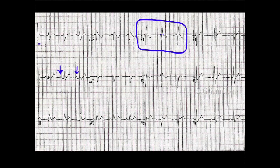To determine this is specifically right bundle branch block, look at V1 for the RSR' pattern. This young man has a very small R wave in V1, which is normal — looking at V2 confirms the R wave exists and is progressing. Then we have an S wave, which is normal — that's the left ventricle depolarizing. And here's the big clincher: we have an R prime in V1. To confirm it, always check lead V6 and or lead 1. V6 has that wide little S wave, and lead 1 also has it. That's everything we need to prove this is a right bundle branch block.